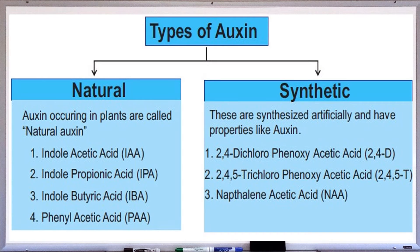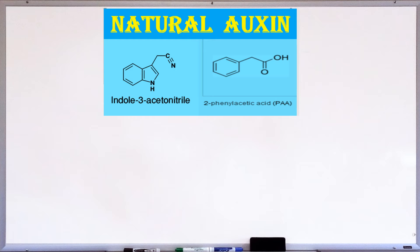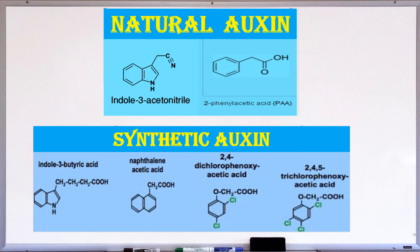Auxins are of two types: natural auxin and synthetic auxin. Auxins produced by the plants are called natural auxin — example: IAA, Indole-3-Acetic Acid. Auxins which are artificially synthesized and have properties like auxin are called synthetic auxins — examples: 2,4-D (2,4-Dichlorophenoxyacetic Acid), PAA (Phenylacetic Acid), IAN (Indole-3-Acetonitrile), Indole-3-Butyric Acid, Indole-3-Propionic Acid, Alpha-Naphthalene Acetic Acid, and 2,4,5-T (2,4,5-Trichlorophenoxyacetic Acid).